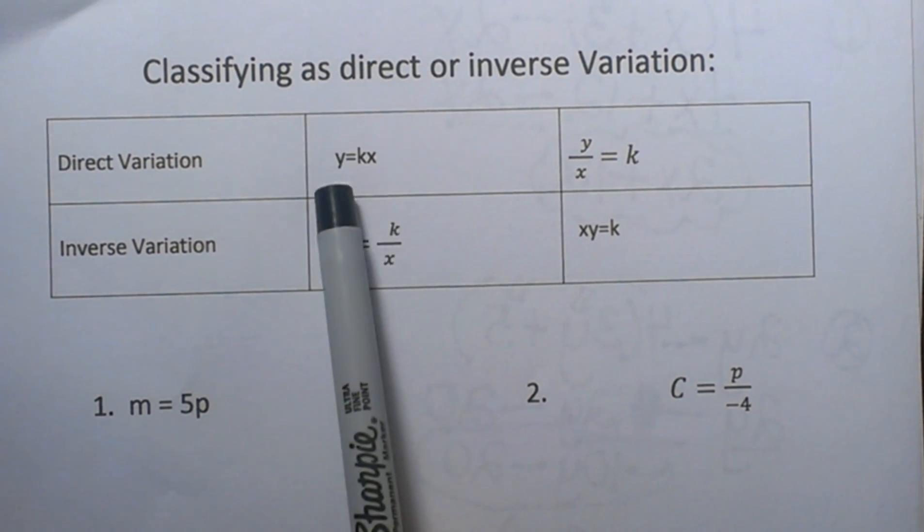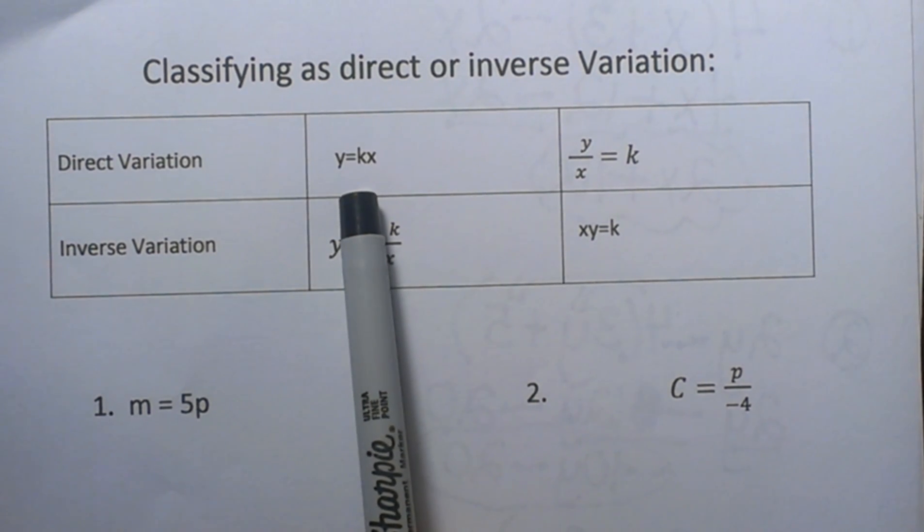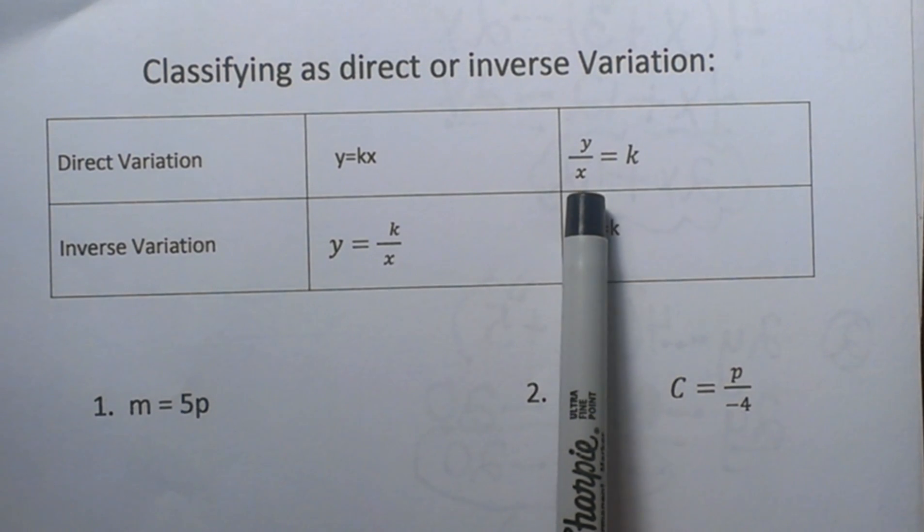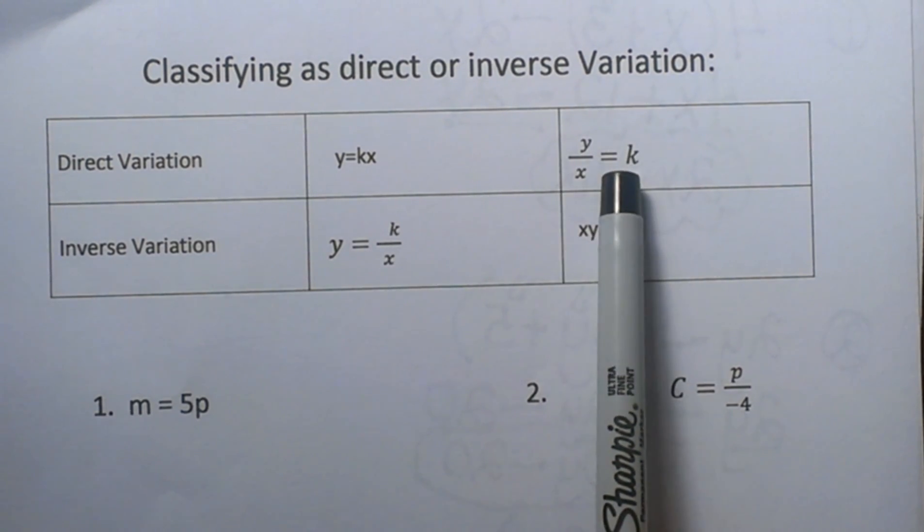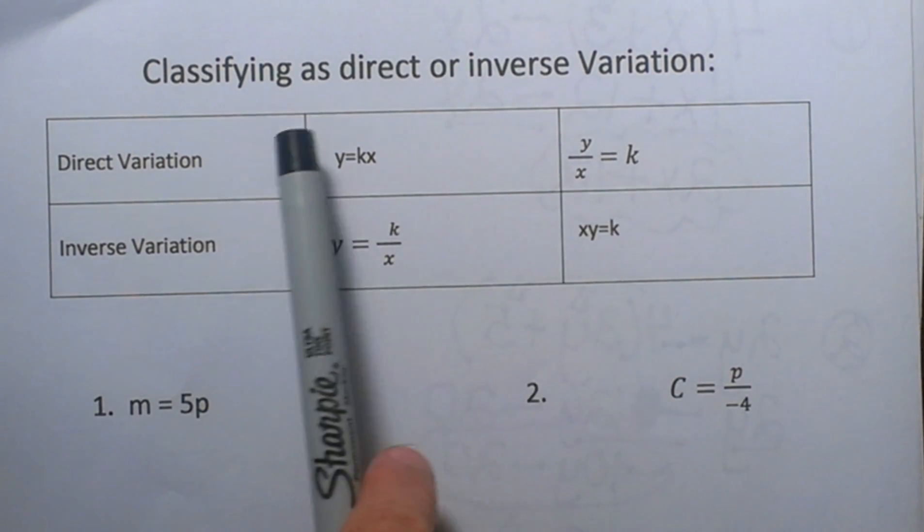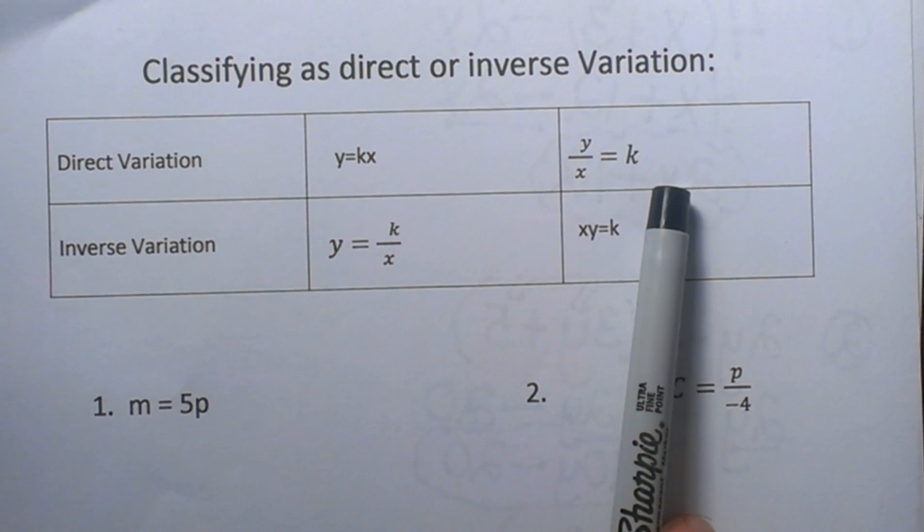You can also change the form of this equation by dividing both sides by x and change it to y over x is equal to your constant. So those are the two forms you are going to see of direct variation.